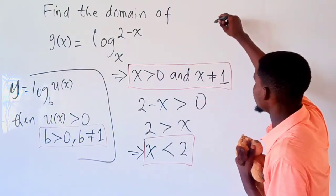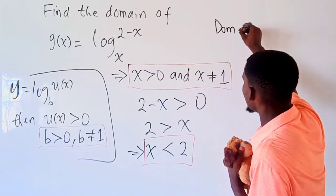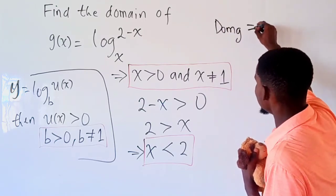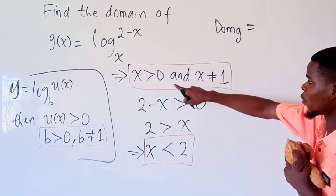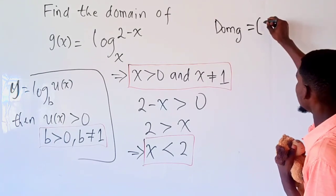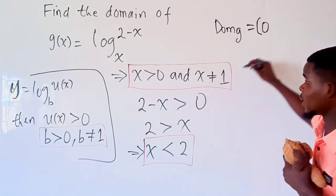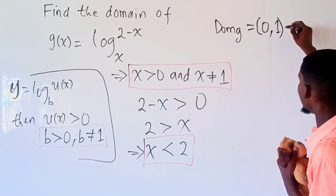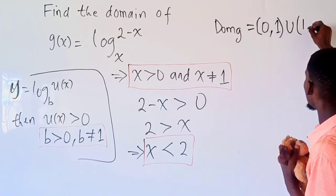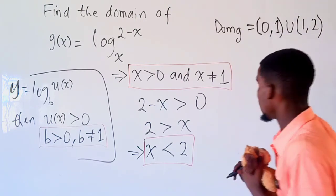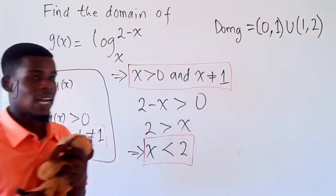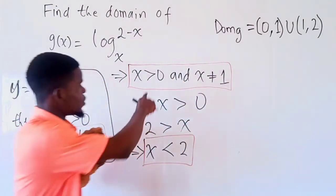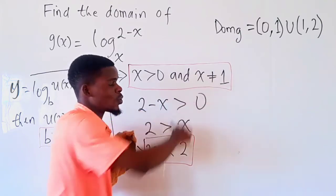The domain of that function we should denote as g(x) is now from zero, but excluding one, we go to one and we exclude that one, union from one to two but we exclude two.